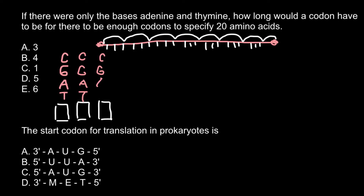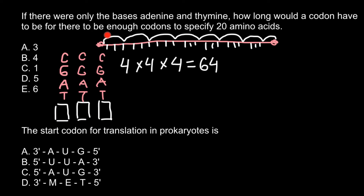Once again, we have cytosine, guanine, adenine, and thymine. For the first place in the codon we have 4 variants, the second position also has 4 variants, so we multiply by 4 — giving us 16, which is not enough. If we add one more position, making it 3 nucleotides, we get 4 × 4 × 4 = 64. This number explains why the minimum number of codons is 64 and why our codon is 3 nucleotides. All proteins are coded by trinucleotides, not dinucleotides or tetranucleotides.